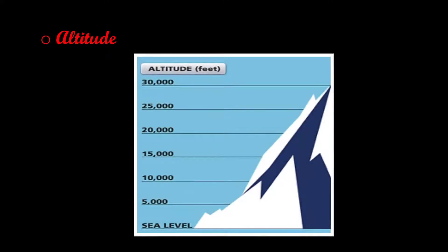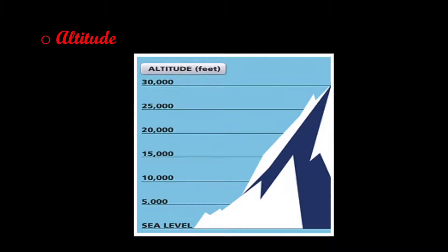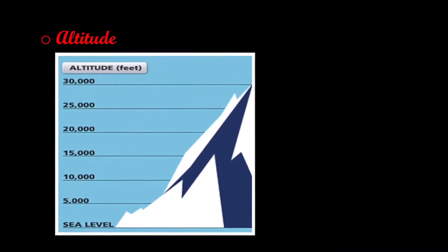Altitude: Another factor responsible for the change in climate of a place is its altitude. Altitude refers to the height of a place above the sea level.